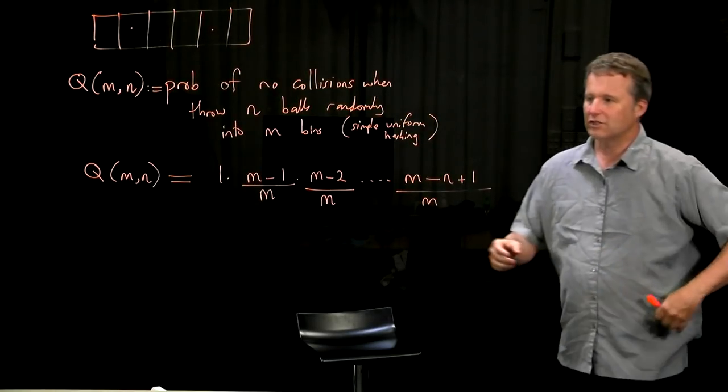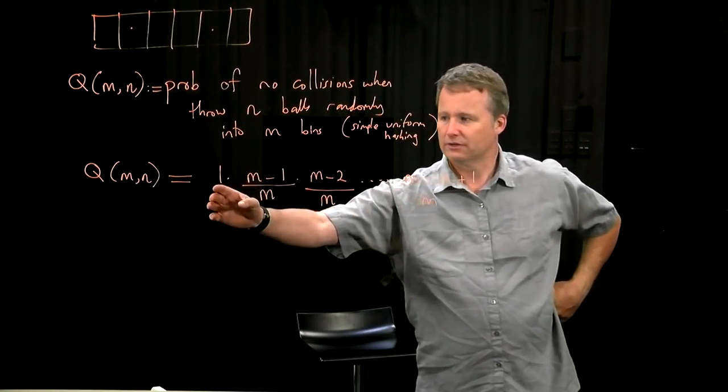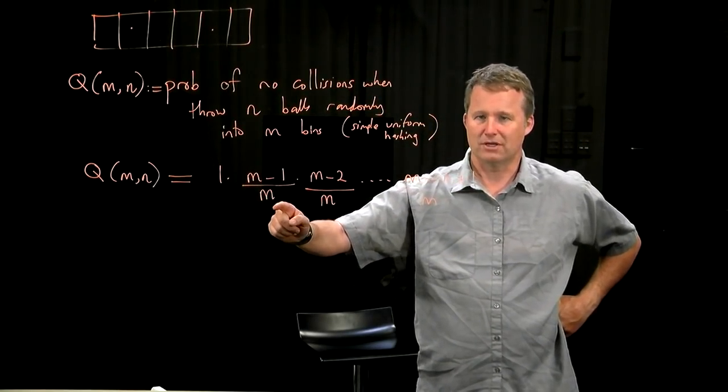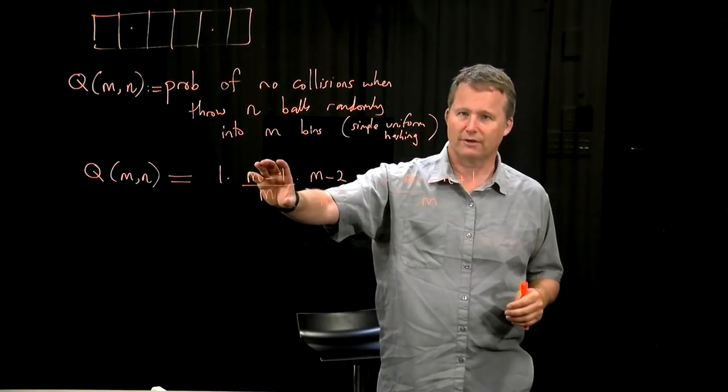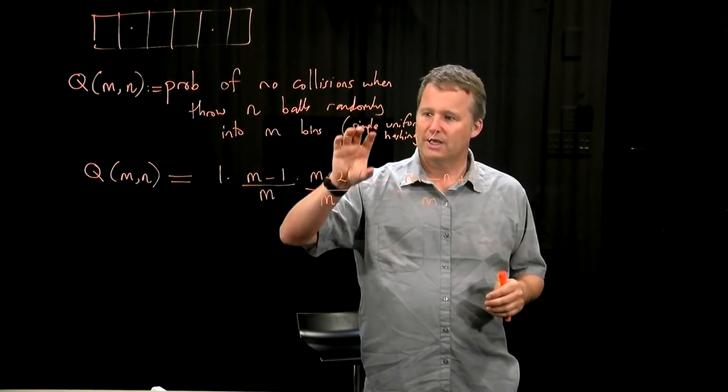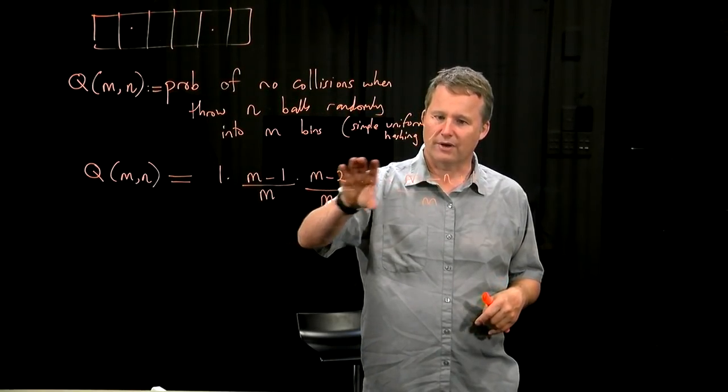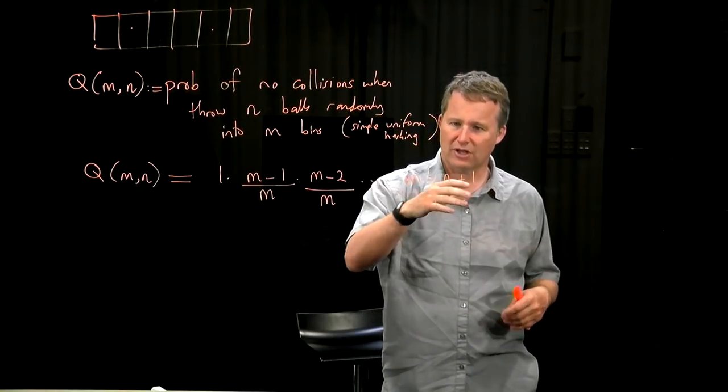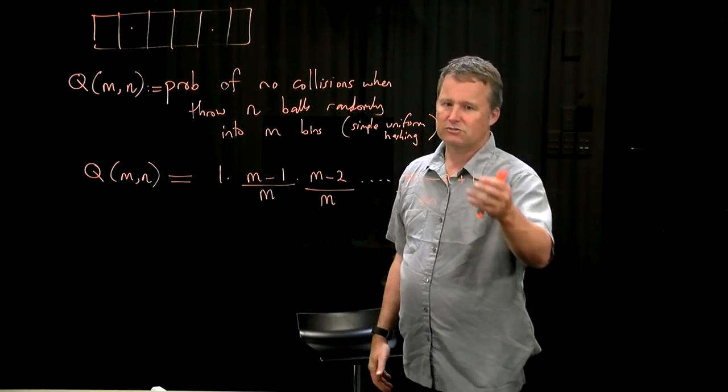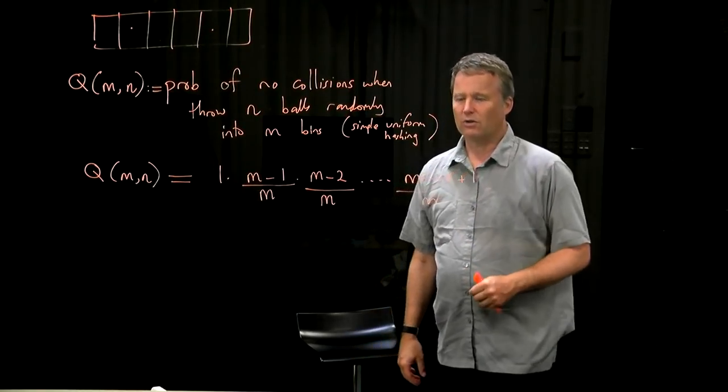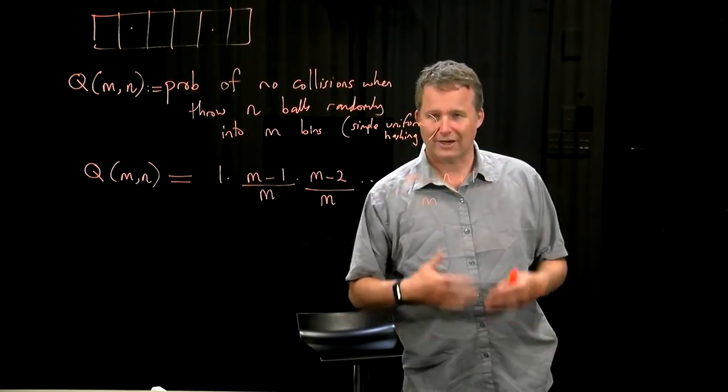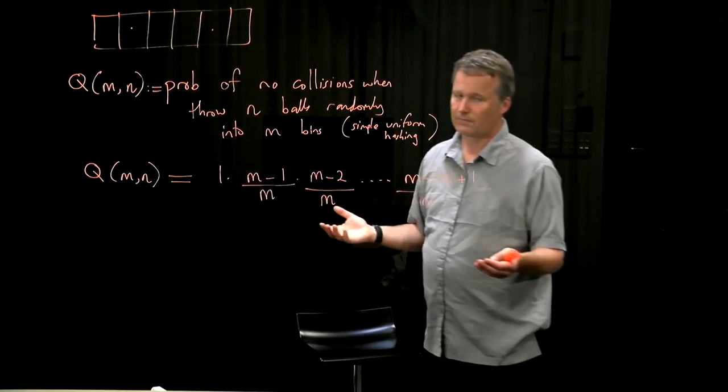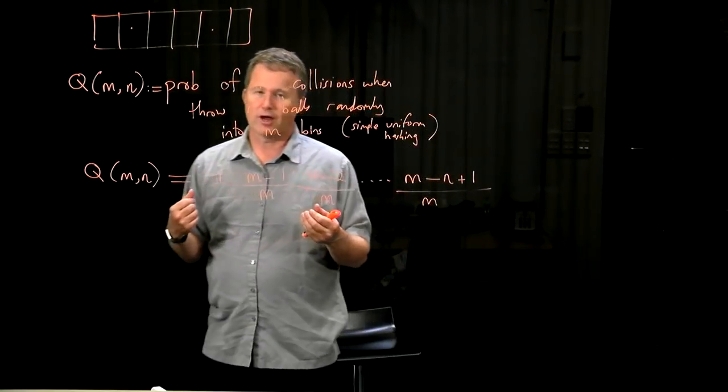Now the key thing here is to notice that this number is 1. This number is 1 minus 1 over M. So if M is a reasonable number, big size table, this is fairly close to 1. This number is fairly close to 1. This is slightly less close to 1. When you get down to here, if N is like half of M, this is roughly a half. You have a whole lot of numbers which are reducing and you're multiplying them all together. And how big is it? Some work required to analyse that.